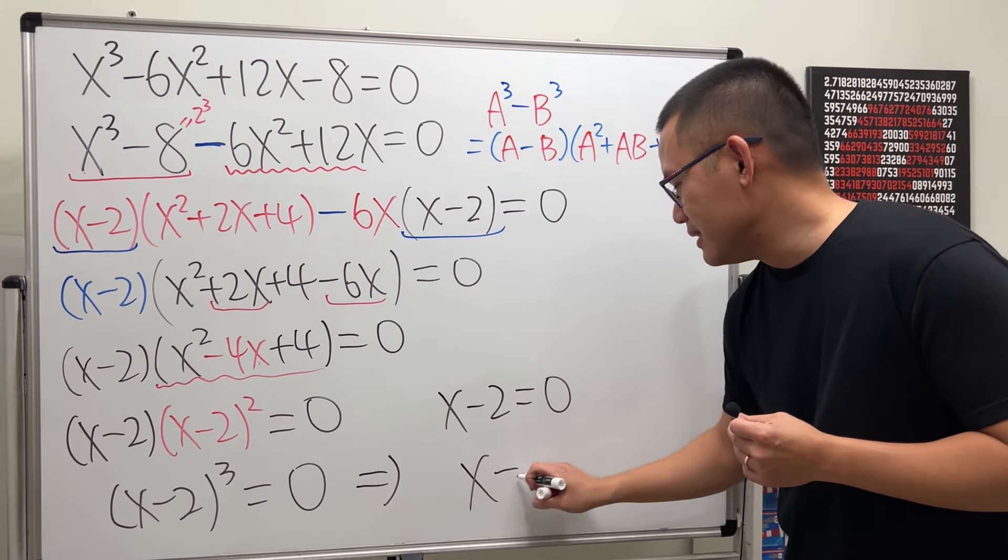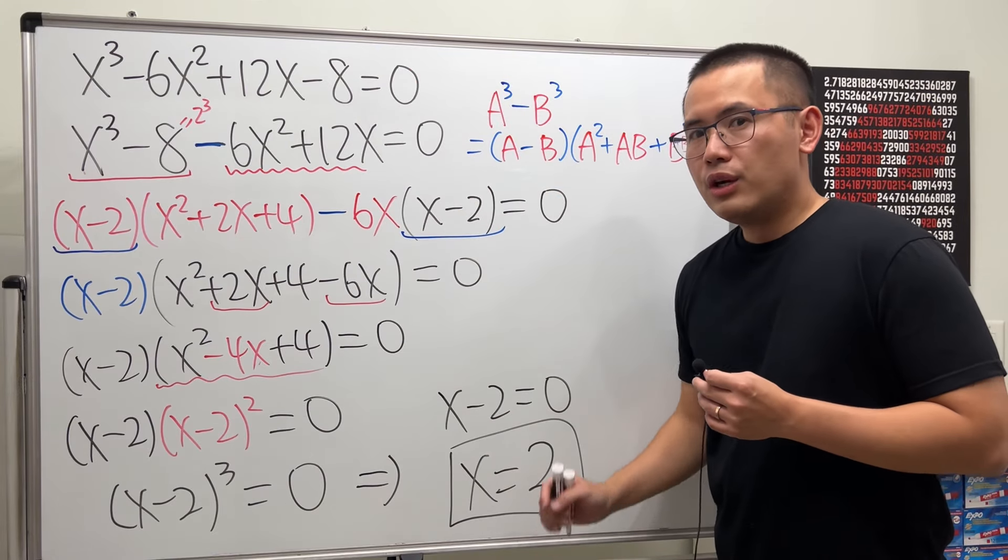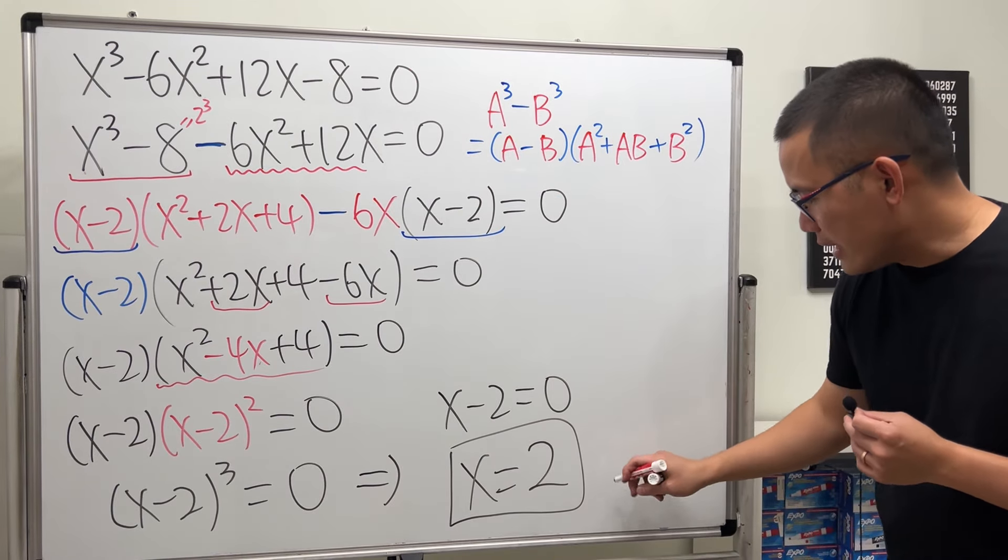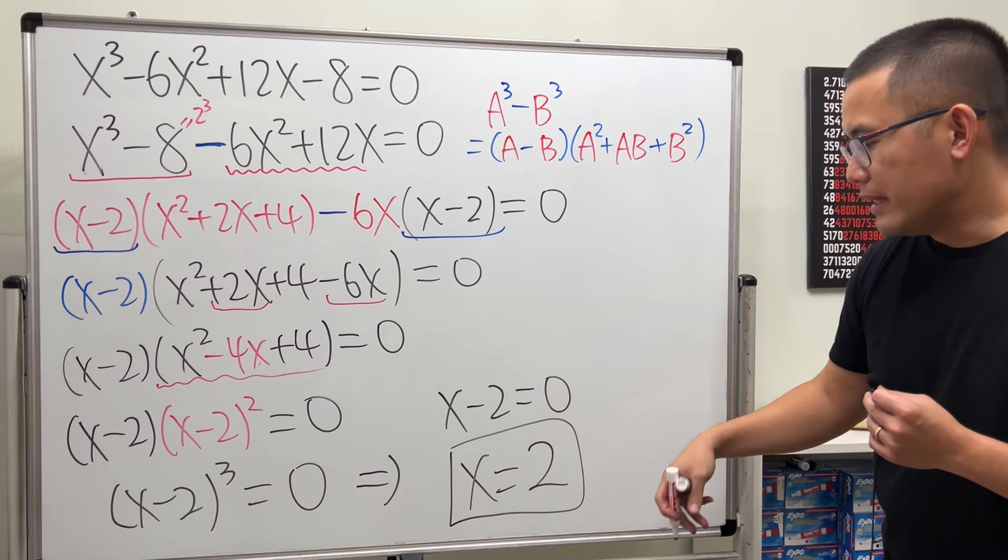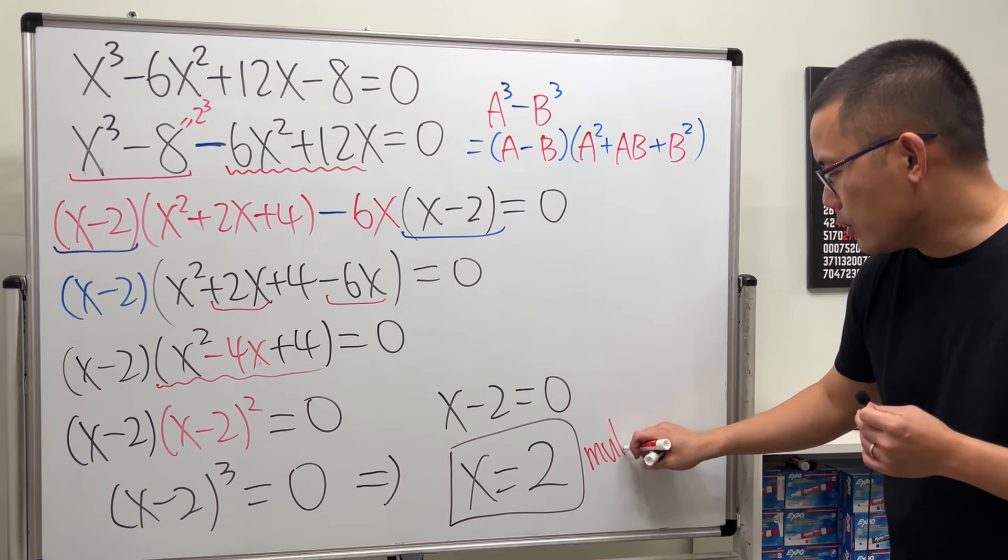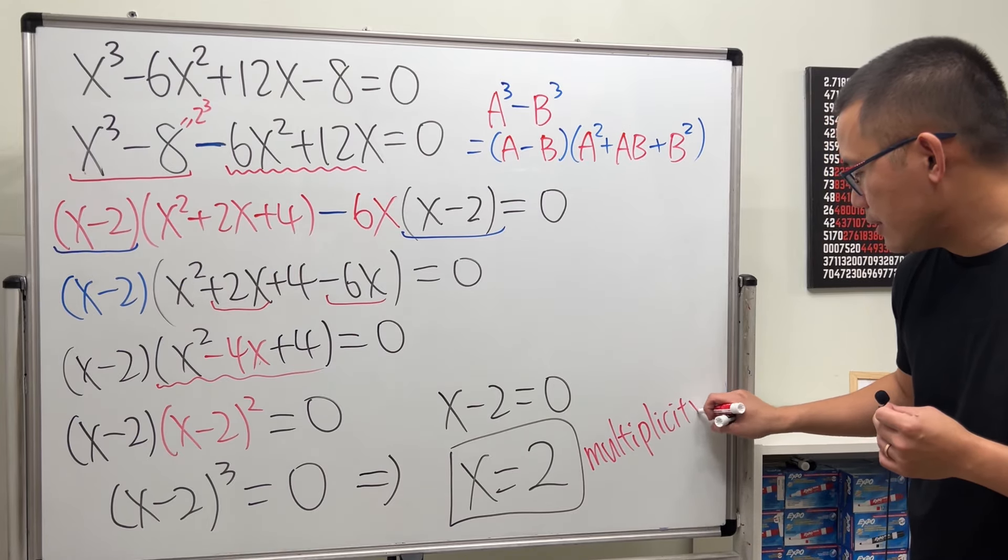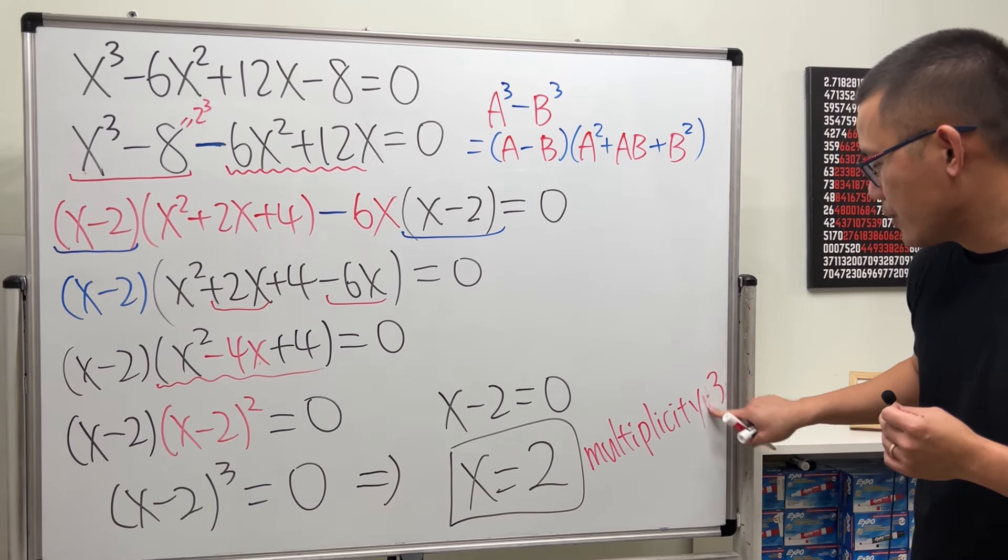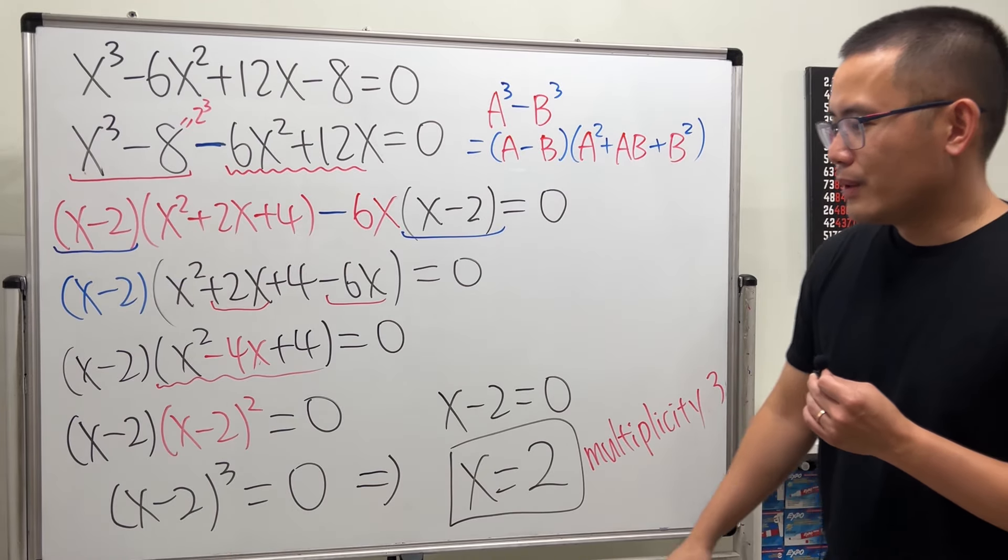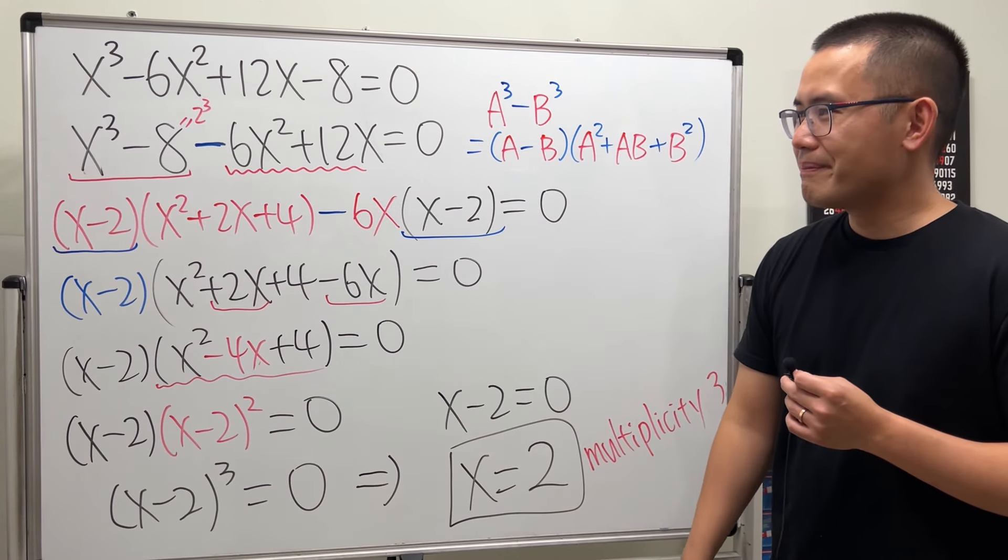That means x is equal to 2. And for this equation, 2 is the only real solution, but we say, this right here, it happens 3 times. And the technical term for that is the multiplicity is equal to 3. Multiplicity is equal to 3. Meaning, you have x minus 2, x minus 2, x minus 2.